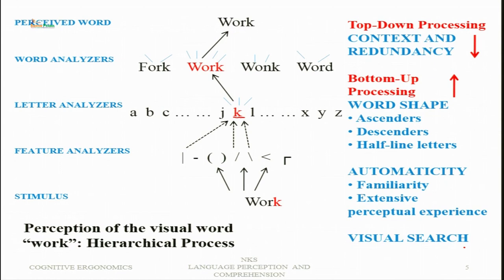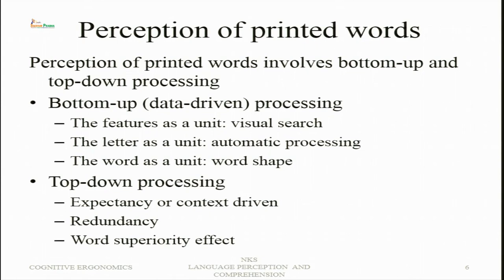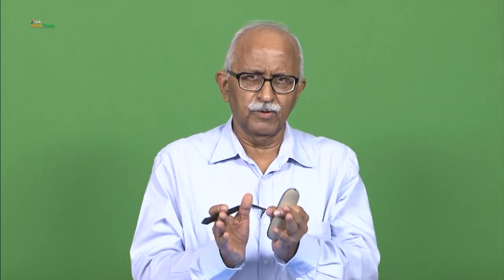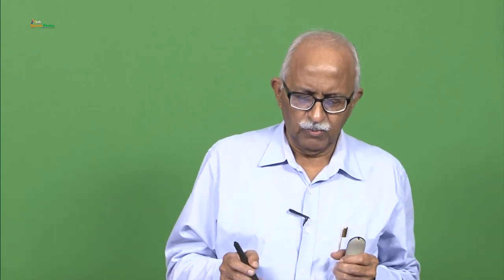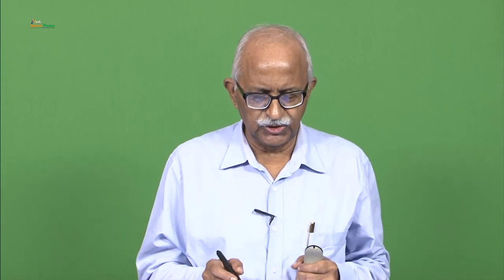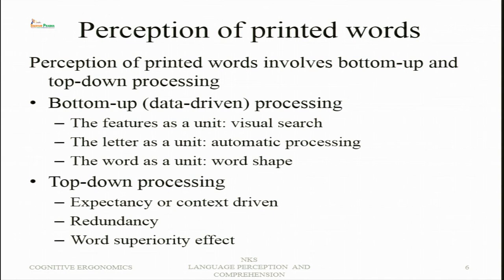Perception of a printed word involves both bottom-up and top-down processing going on concurrently, converging into a final decision. Bottom-up processes are also called data-driven and use features, letters (with automatic processing), and word shape as units at different hierarchical levels. Top-down processing comes from the top to the bottom, where experiential context gives us correct recognition of the word.